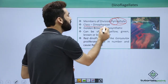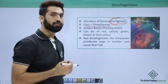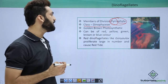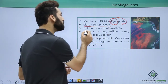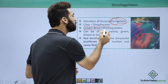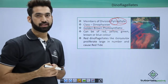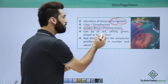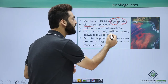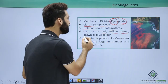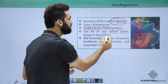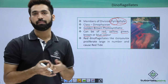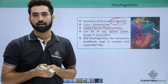They belong to the class Dinofyceae. The division is Pyrophyta and the class is Dinofyceae. They are also called golden-brown photosynthetic protista members, but they can be of red, yellow, green, brown, blue, or any other color — basically depending upon the pigments they have.